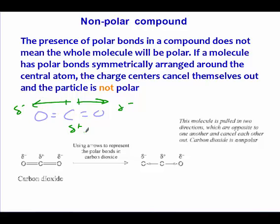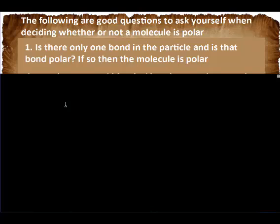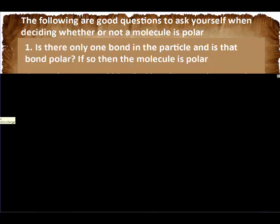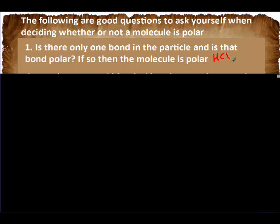It's really hard to tell if bonds are symmetrically arranged or if the molecule has a slightly positive and slightly negative end, and that's why there are some questions you can ask yourself. The first question is, is there only one bond in the particle and is that bond polar? If so, then the entire molecule will be polar. Make sure you're writing down the examples that go along with each of these. HCl would be an example where the bond is polar due to an electronegativity difference and therefore the entire molecule is polar.